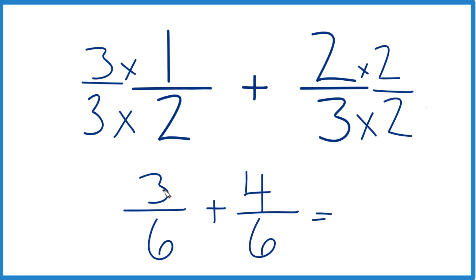Same denominator, just add the numerators. 3 plus 4, that's 7. And then we just bring the 6 across. We get 7/6.